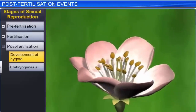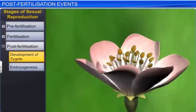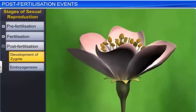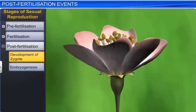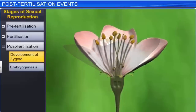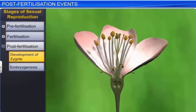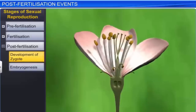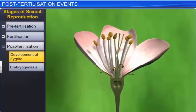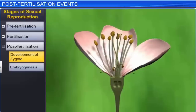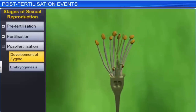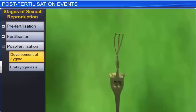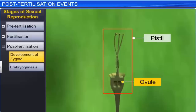Apart from animals, the development of the zygote and embryogenesis occur in flowering plants as well. Interestingly, the formation and subsequent development of the zygote inside the ovule triggers the withering of other parts of the flower, including the sepals, petals, and stamens. The pistil, which contains the ovule, however, remains attached to the plant.